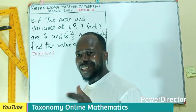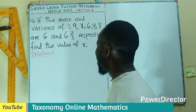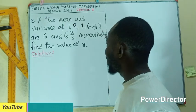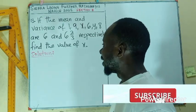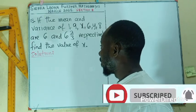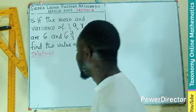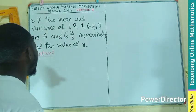Hello, welcome. Question 13. If the mean and the variance of 1, 9, x, 6, y, and 8 are 6 and 6 whole number 2 over 3 respectively, we have to find the value of x. This is similar to what came to the Nigerian, but the Nigerian have a standard deviation.